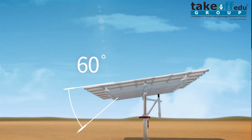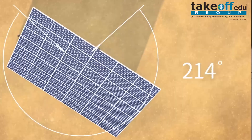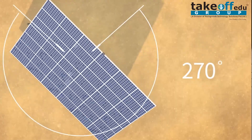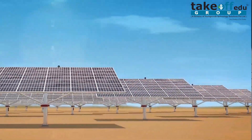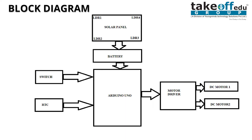Using some hardware components, software coding, and mechanical arrangements, we can design a dual axis solar tracking system. Coming to the block diagram, we are using LDRs, an RTC module, an Arduino controller, a motor driver, DC motors, and solar panels.